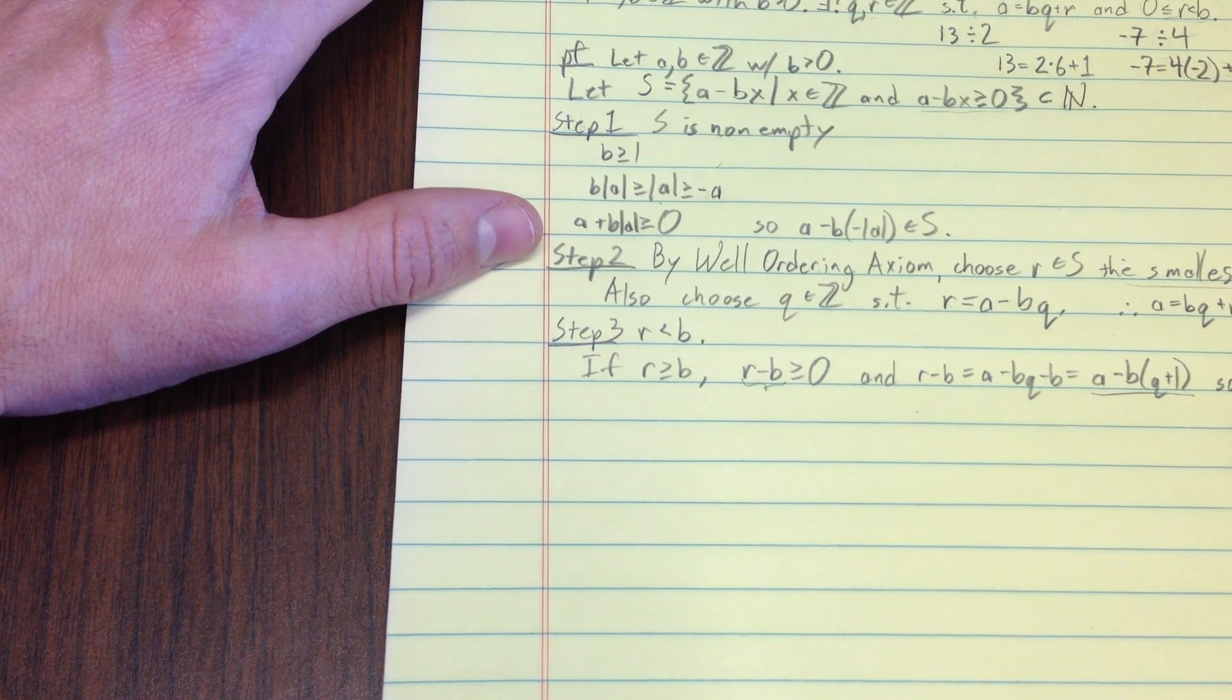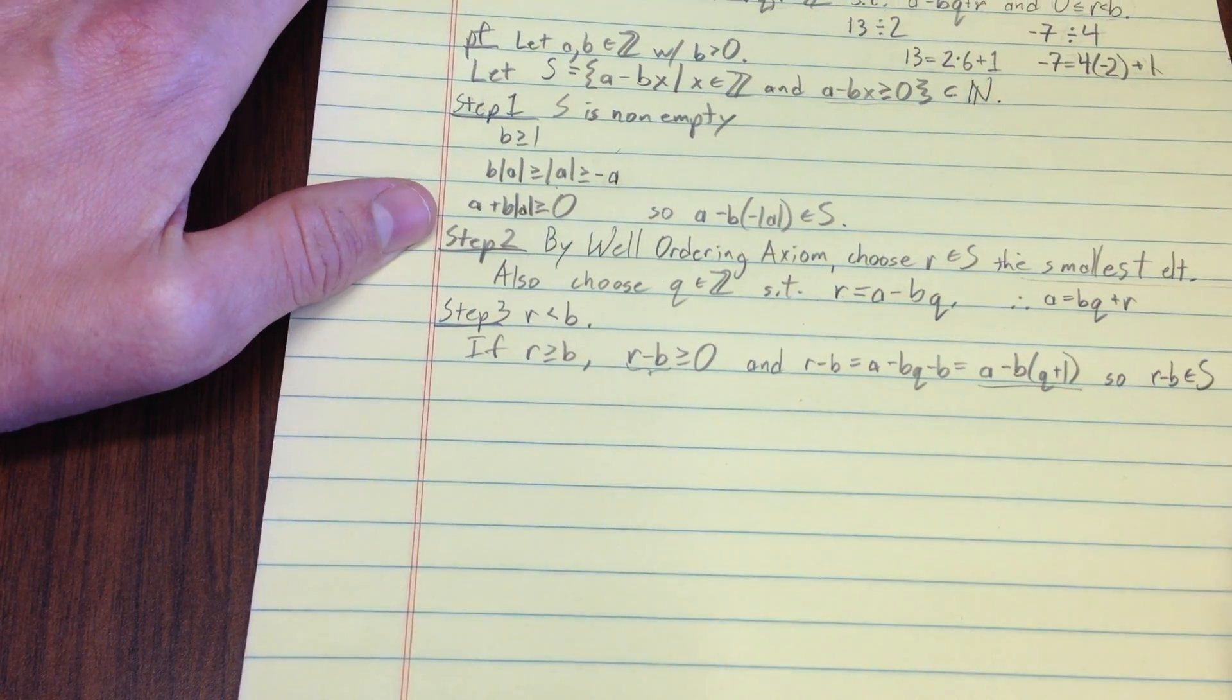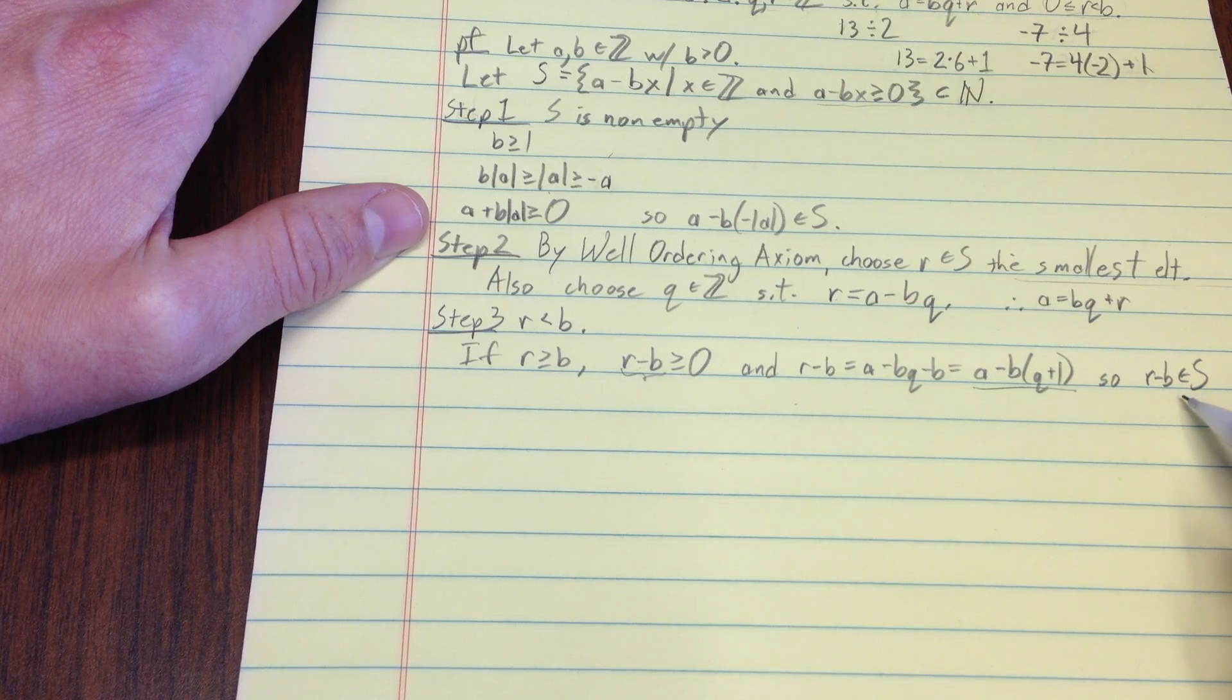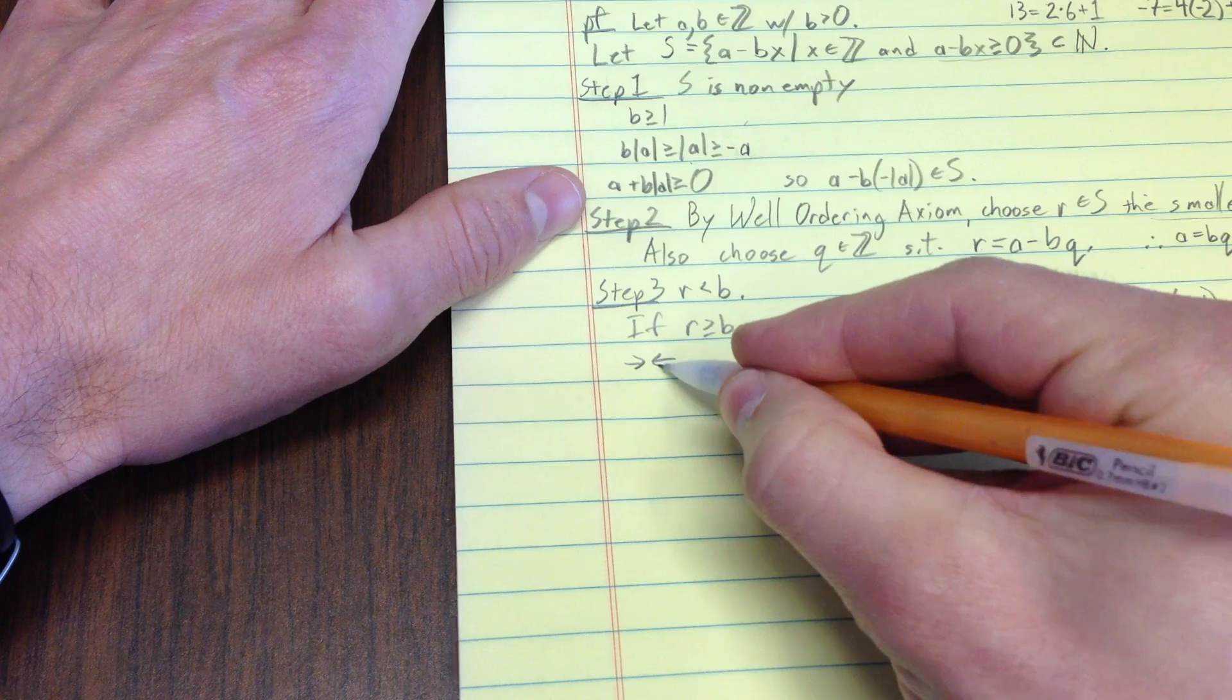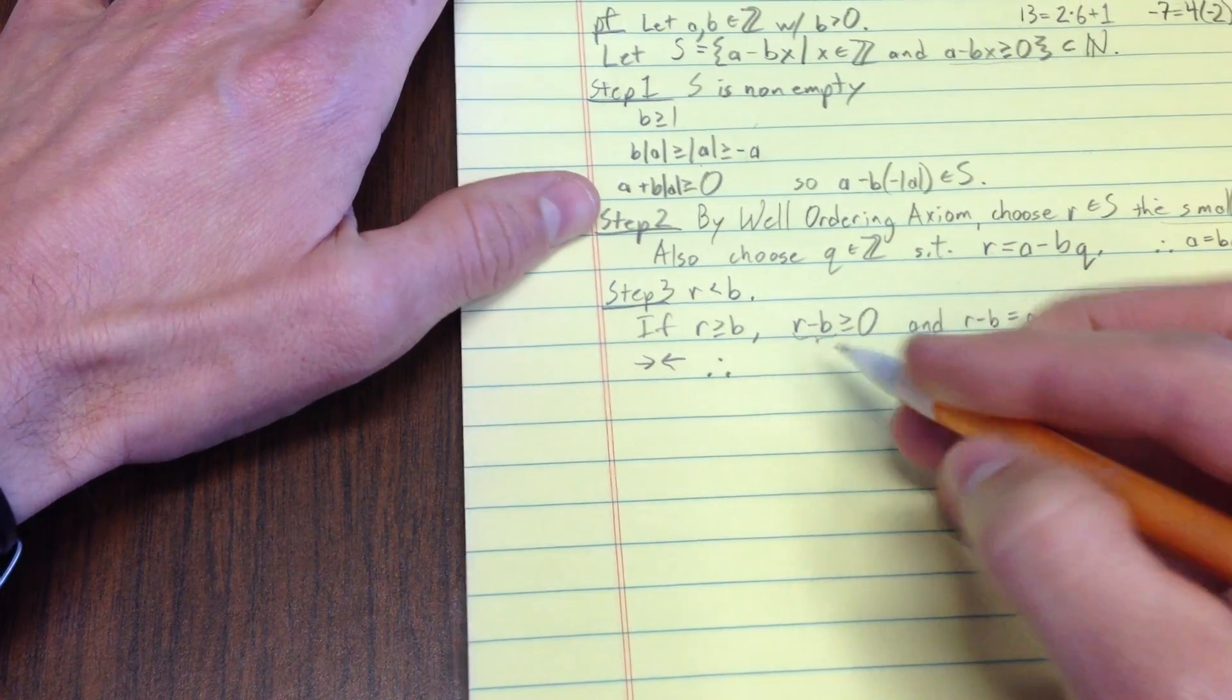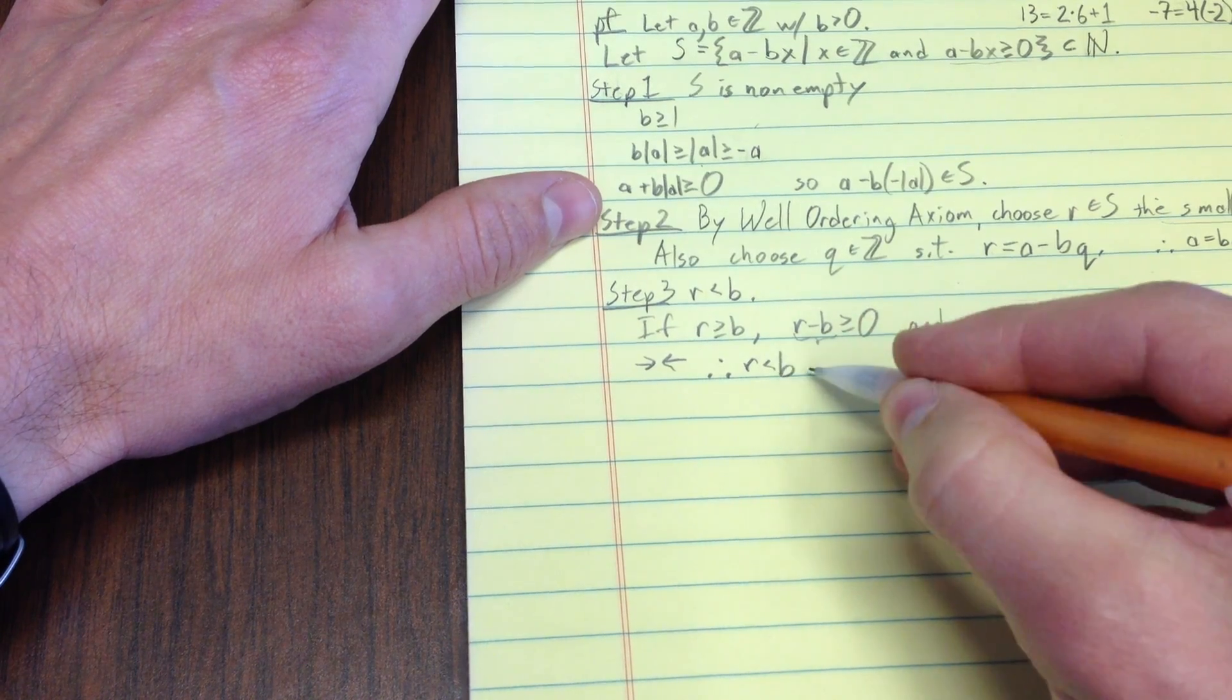So, r minus b is an element of s. Well, that's a contradiction, right? That means that r isn't the smallest element. So, that's a contradiction. Therefore, r can't be greater than or equal to b, so r is less than b.